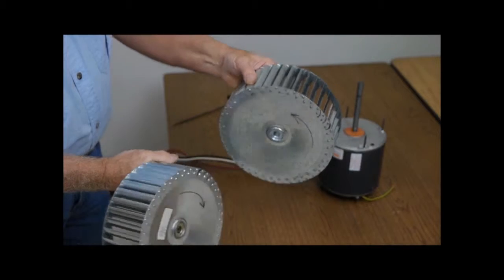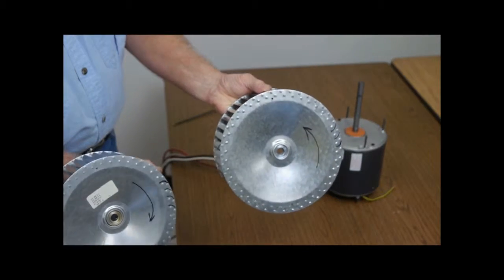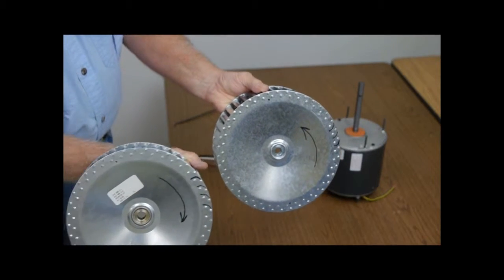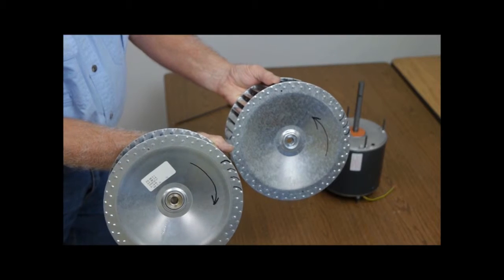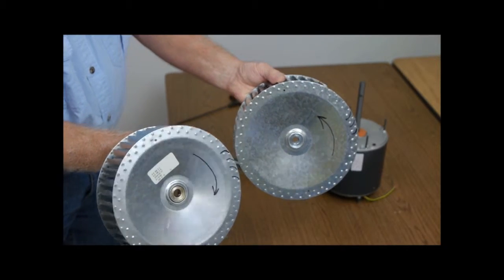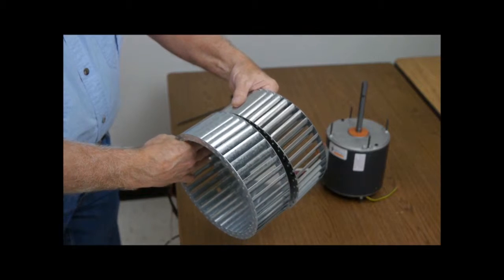When you put the two wheels on the motor, they will be facing each other so that the blades are going in the same direction. Be sure that when you place them on the motor, the wheels will be rotating in the same direction as your original wheel.